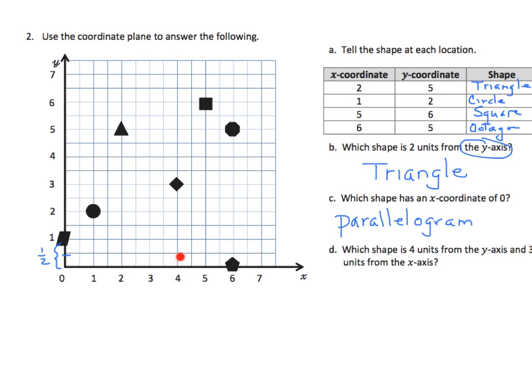And 3 units from the x-axis. So we need to go, here's our x-axis. We need to go 1, 2, 3 units. And we see that we have a diamond in that position.